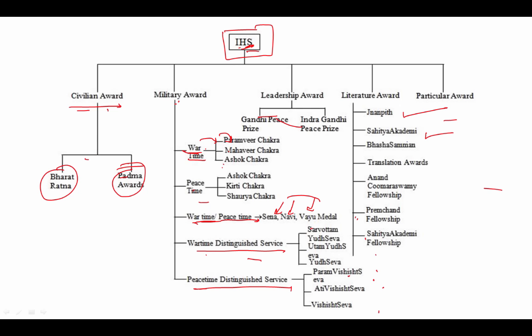The translation award is given for outstanding translation of a major work from one of the 22 scheduled languages into another. The Anand Kumar Swami Fellowship Award is given to Asian country students to spend 3 to 12 months on their literary work.